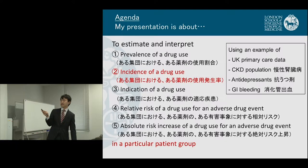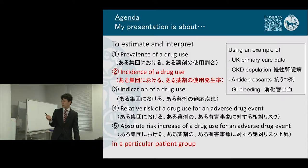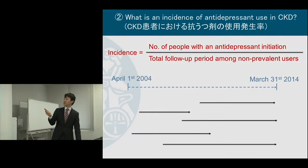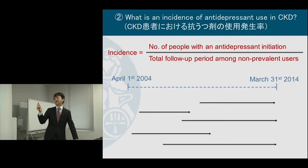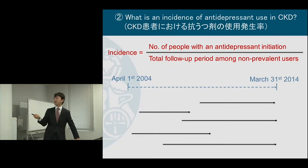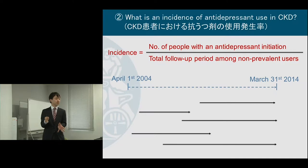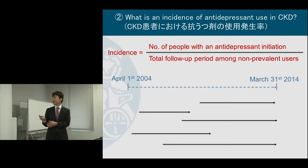Let me move on to the incidence of drug use. Incidence is relatively easy. The incidence is calculated by the number of people with antidepressant initiation divided by the total follow-up period among patients at risk for starting the antidepressant — that is, non-prevalent users.